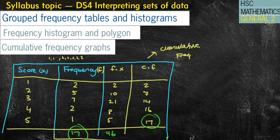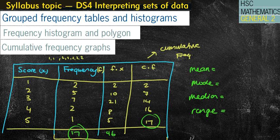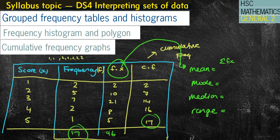That's pretty much most of the stuff you've done this year. From this you answer things like the mean, the mode, the median, and the range. The mean is how you add up all the scores and divide by how many scores there were — that's the whole reason why you do an fx column. It's the sum of the fx column divided by the sum of the frequency column, so in this case it'd be 46 divided by 17.